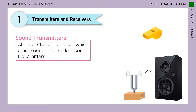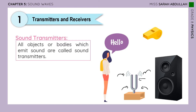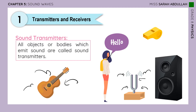There is the tuning fork — it's like a metal fork where you strike it with a rubber hammer and it will emit sound. There are also our vocal cords; this is how we speak, I'm emitting sound right now. And of course we have all musical instruments, in this case the guitar. They emit sound, so these are called sound transmitters.